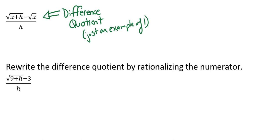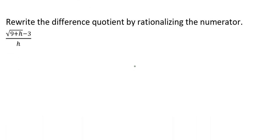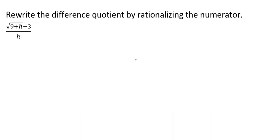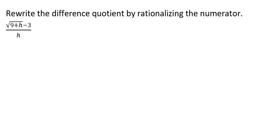Our example is actually going to be of a difference quotient, and here we're going to rewrite this difference quotient by rationalizing the numerator. So we're going to begin by multiplying the numerator and the denominator by its conjugate. Remember, we are rewriting the numerator, so we're taking the conjugate of the numerator here.